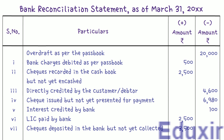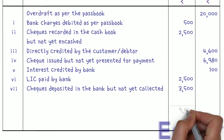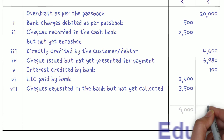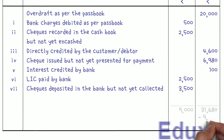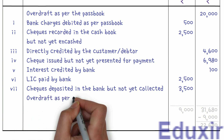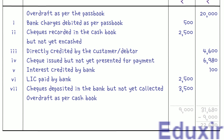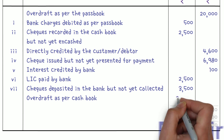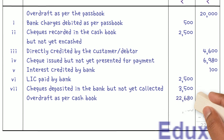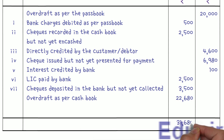We have completed recording all details into the bank reconciliation statement. The total of all entries in the plus amount column is 9,000 rupees, and the total in the minus amount column is 31,680 rupees. Subtracting 9,000 from 31,680 gives 22,680 rupees, which is the cashbook overdraft balance. We write 'Overdraft as per cashbook' and enter 22,680 rupees in the plus amount column. Now both the plus and minus columns total 31,680 rupees, balancing the statement. That concludes this solution.